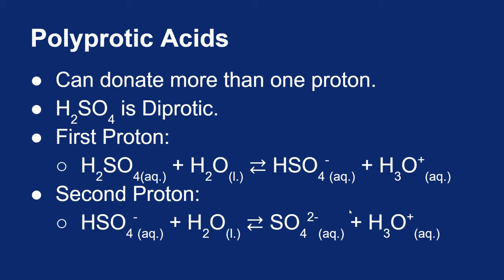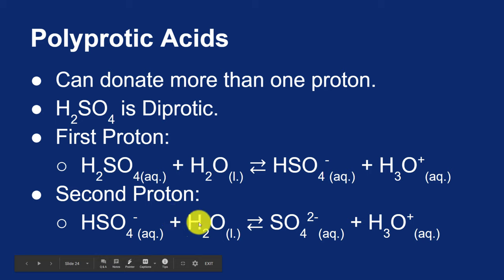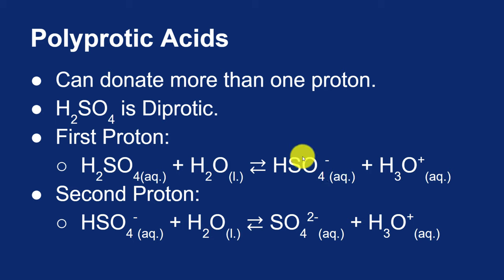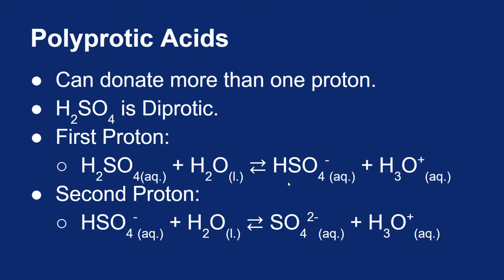In the second reaction, the bisulfate ion HSO4 minus is donating a proton — it is an acid. In the first reaction, the bisulfate ion is the conjugate base — it would accept a proton from the hydronium ion to turn back into H2SO4. So in the first reaction it's a conjugate base, and in the second reaction it's an acid. This bisulfate ion is amphoteric — it can act as an acid or a base.